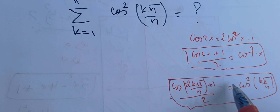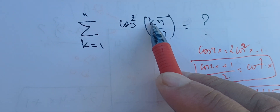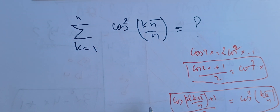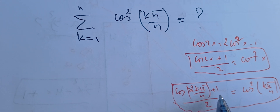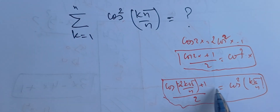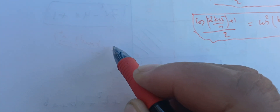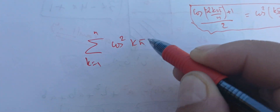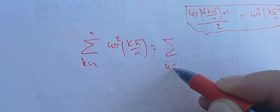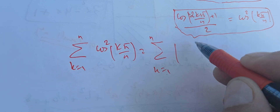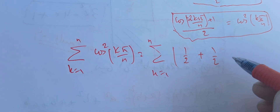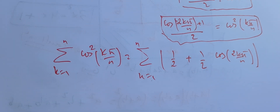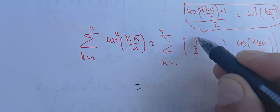This relationship lets me change the problem involving squares into something easier to compute. So the sum from k=1 to n of cos²(kπ/n) becomes the sum from k=1 to n of (1/2 + (1/2)·cos(2kπ/n)).